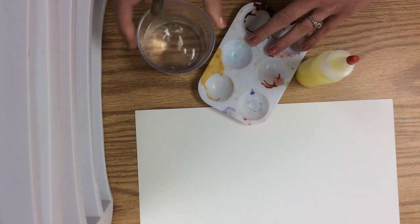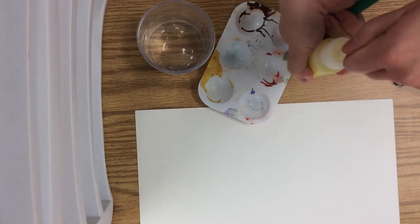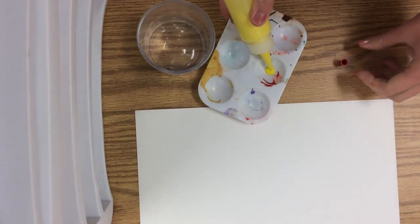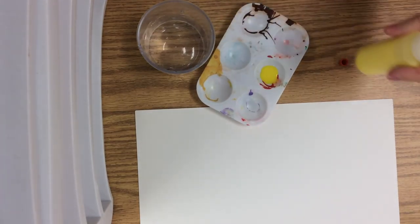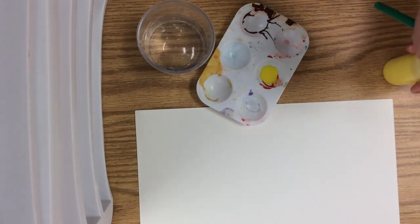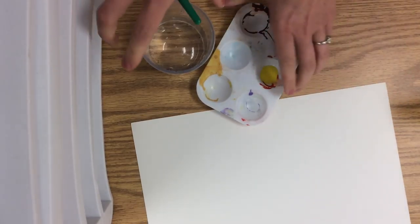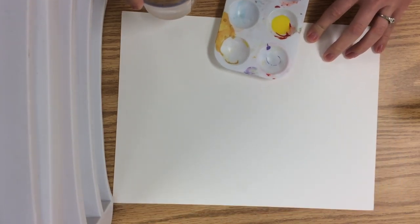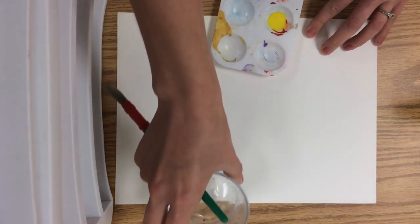Today we are making the background for our printmaking project. We're going to start with watercolors. We're going to use liquid watercolors today. You can choose one or more colors, and you're going to paint the entire background of your paper.